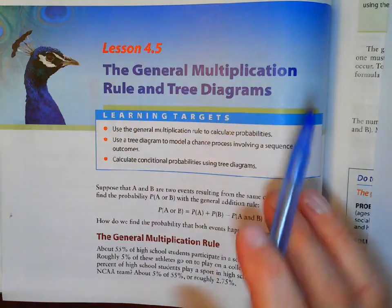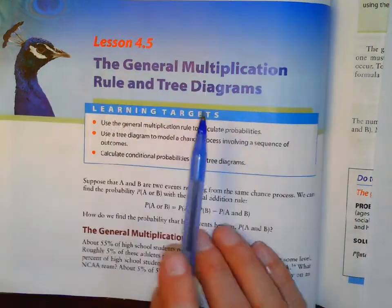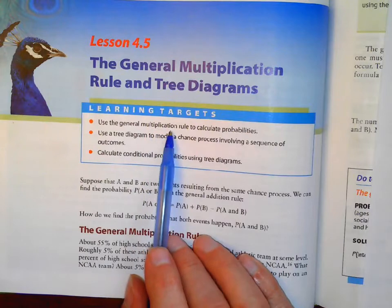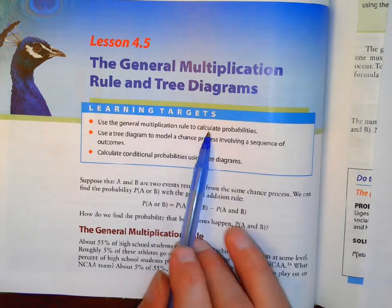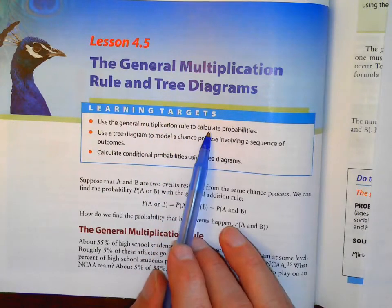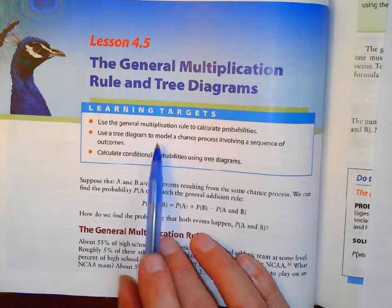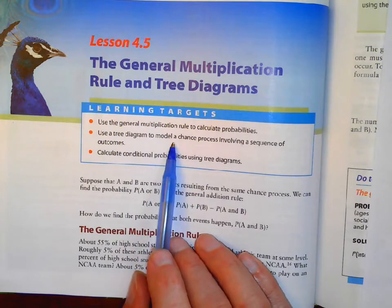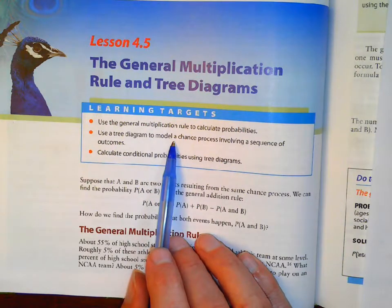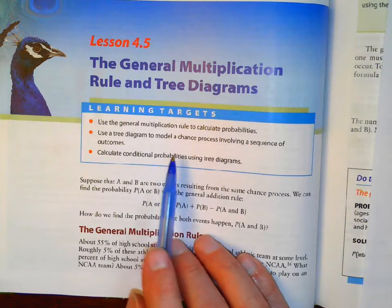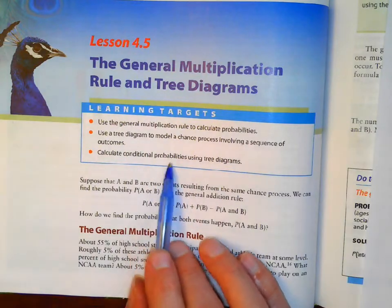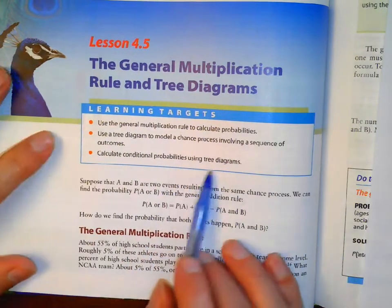These are notes 4.5. We're going to do three things: use a general multiplication rule to calculate probabilities for AND statements, use a tree diagram to see what possible outcomes there are and their probabilities, and calculate conditional probabilities using these tree diagrams.